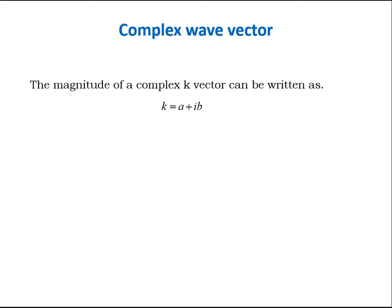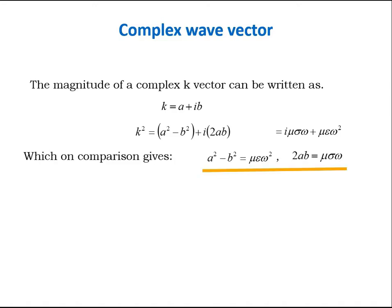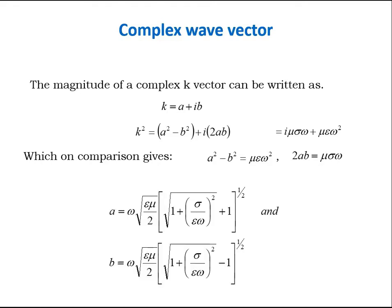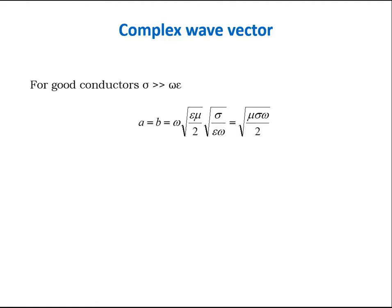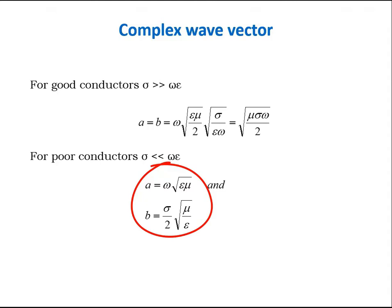So let k is written as a plus ib, a general form of complex number. Then k square can be written like that, which we had already found equal to iota mu sigma omega plus mu epsilon omega square. So a square minus b square and 2ab get their values in terms of mu sigma omega and epsilon. By these relations, we can find the values of a and b in terms of omega, epsilon, mu and sigma. It is to be noted that for a very good conductor, sigma is very high and for a poor conductor, sigma is very less. So for a good conductor, a and b become equal to each other and that is equal to under root of mu sigma omega by 2. And for a very poor conductor, sigma is very less than omega epsilon. So a and b get their different values. And these are given by a equal to omega under root epsilon mu, b equal to sigma by 2 under root of mu by epsilon.